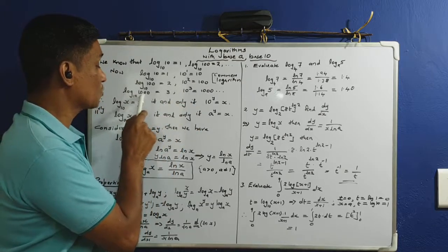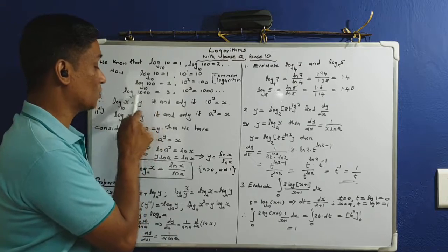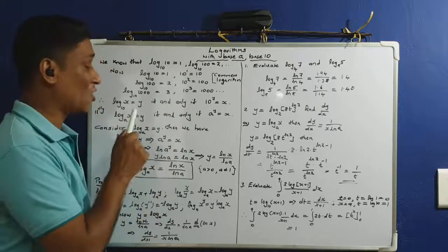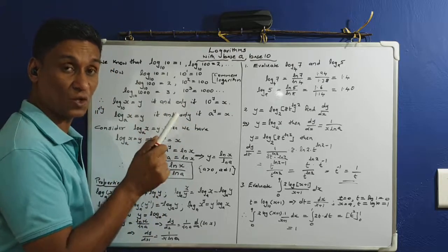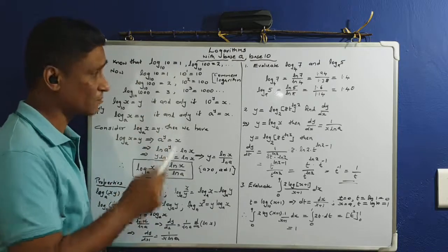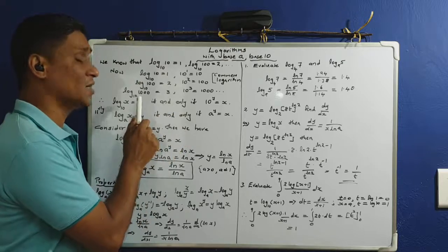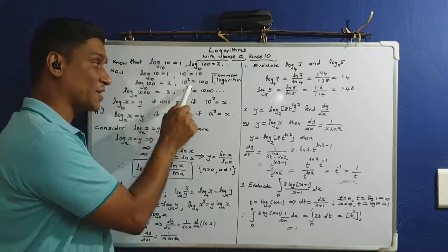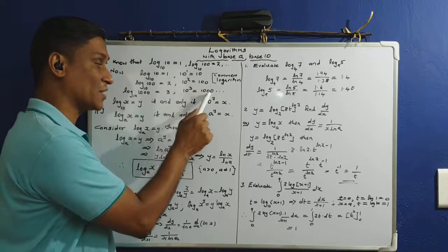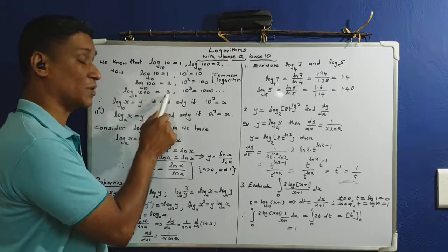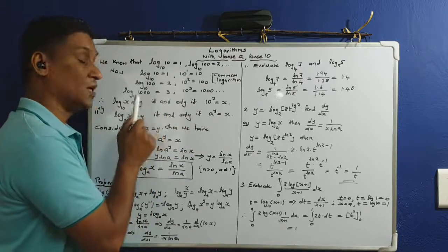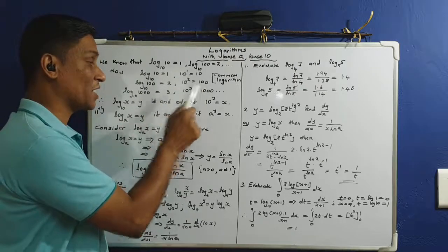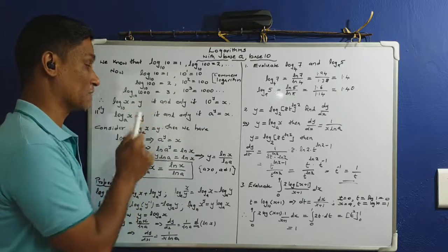Log of 1000 to the base 10 is 3, since 10 raised to 3 equals 1000. Log of 10,000 to the base 10 is 4, since 10 raised to 4 equals 10,000. This is a typical example: log of 1000 to the base 10 equals 3, meaning 10 raised to 3 equals 1000.